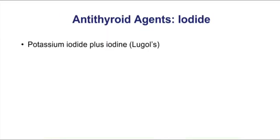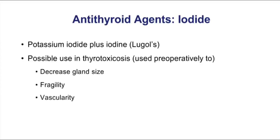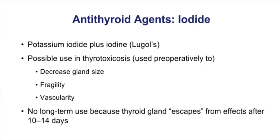Occasionally, you can use iodide in the form of potassium iodide plus iodine. We call that Lugol's solution, and this is sometimes used in thyrotoxicosis. The problem with Lugol's solution is that the thyroid gland does not respond to this drug after about 10 days, so it's only used short-term.